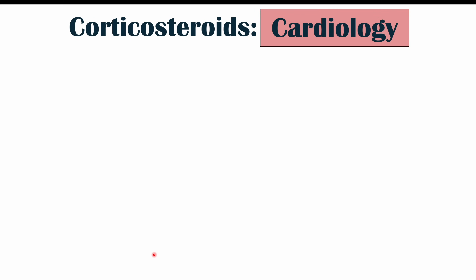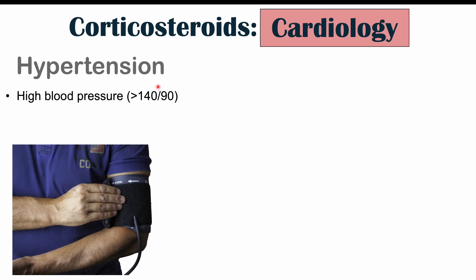The first system we'll discuss is the cardiovascular system. Corticosteroid use can lead to hypertension — high blood pressure, usually defined as greater than 140 over 90. This is due specifically to corticosteroid-induced salt retention, as corticosteroids act on the kidneys. Higher levels of corticosteroids over longer periods of time lead to more salt retention in the kidneys, which can lead to hypertension.